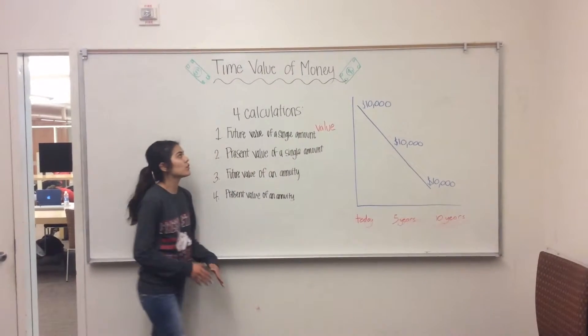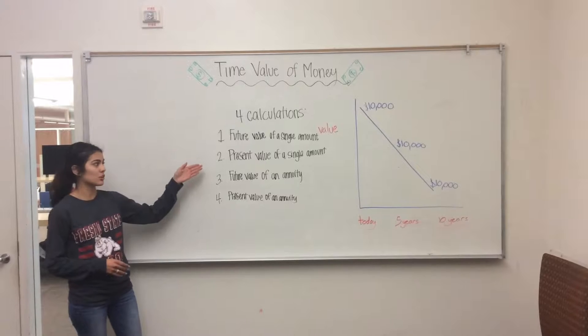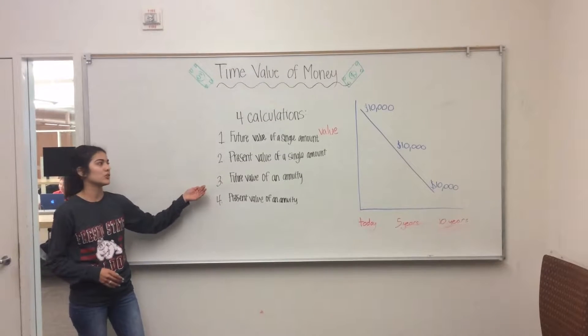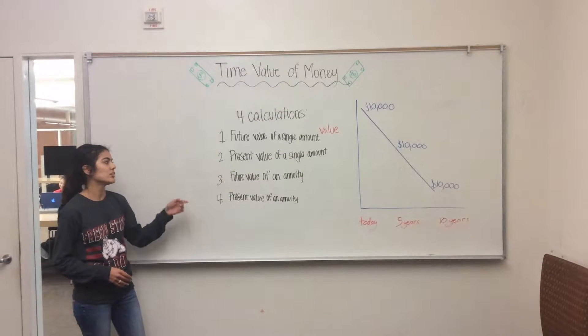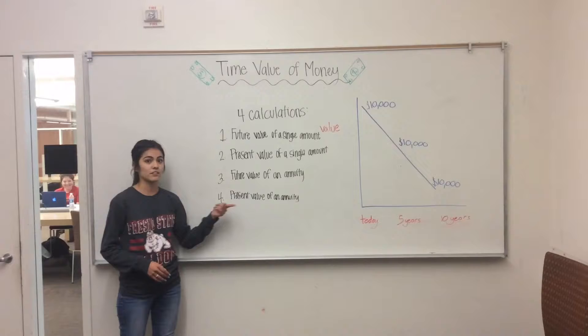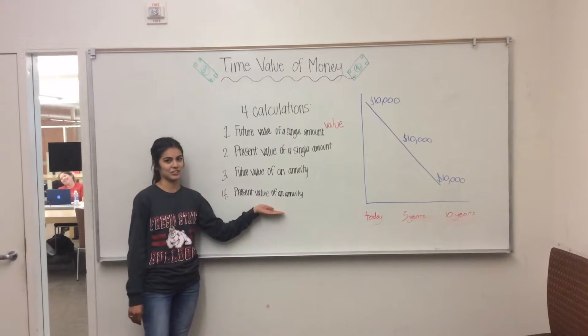This involves four different calculations. The first is the future value of a single amount. The second is the present value of a single amount. The third is the future value of an annuity. And the fourth is the present value of an annuity.